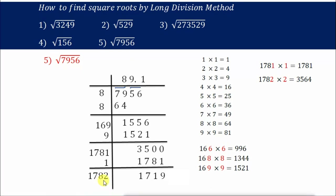The remainder is getting quite big, so I will stop here. The root of 7956 is approximately 89.1. I hope it is clear for you students. If you have any questions, you can ask me in the comments. If you like this video, please hit the like button and subscribe to my channel. Thank you.